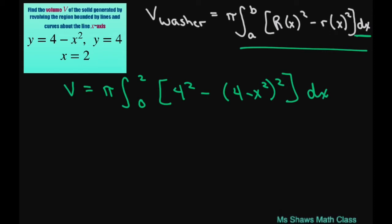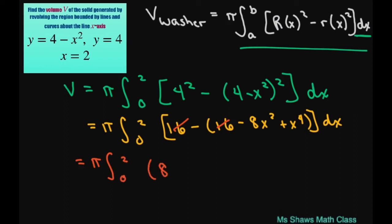This is going to equal pi times the integral from 0 to 2 of 16 minus 16 minus 8x squared plus x to the power of 4 dx. And what happens is these 16s are going to cancel out, and we're going to end up getting pi times the integral from 0 to 2 of 8x squared minus x to the power of 4.